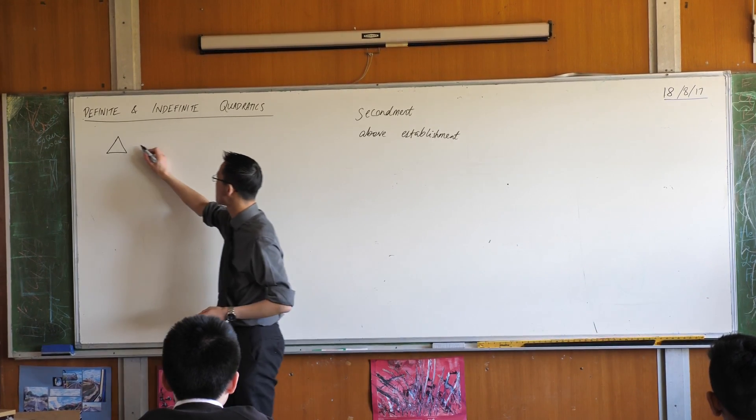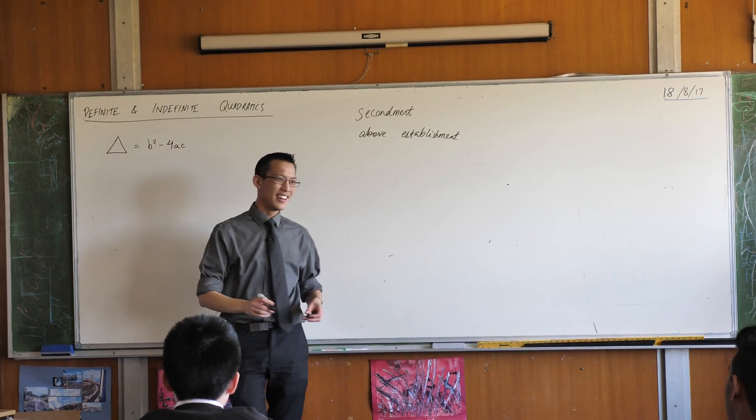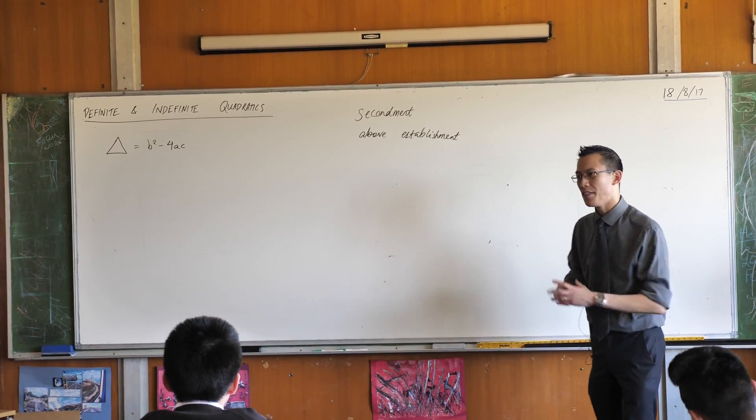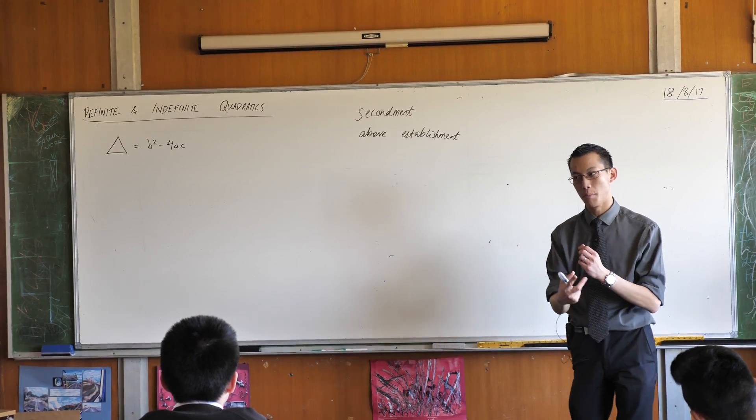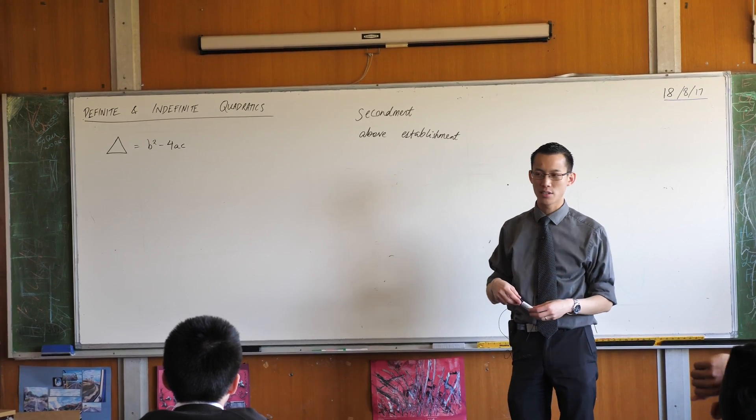So in a quadratic function this is how we calculate, evaluate what the discriminant is. And the discriminant is called the discriminant because it discriminates between the various kinds of quadratic functions.